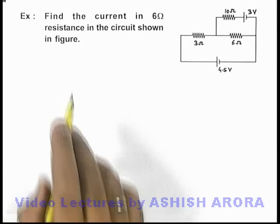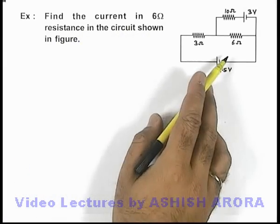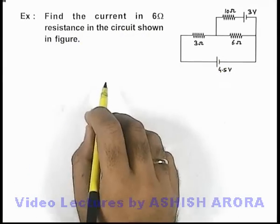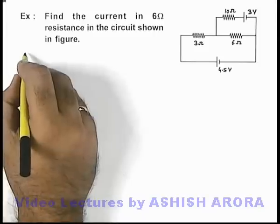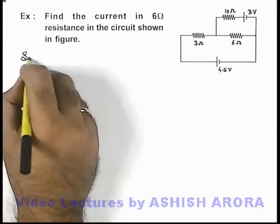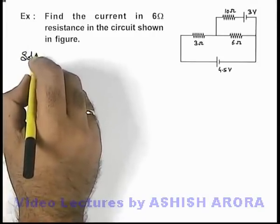In this example we are required to find the current in 6 ohm resistance in the circuit shown in figure. Here we can also solve it by using either KCL or KVL.